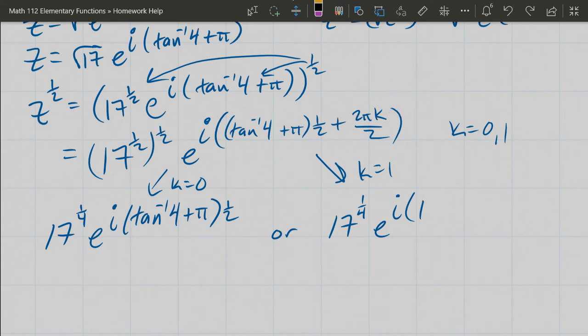So I'm going to carefully write this: tan⁻¹(4) + π, that's times 1/2. Now k is 1, you get 2π/2, which is just plus π.